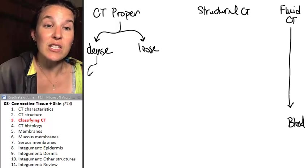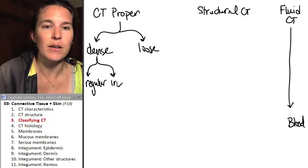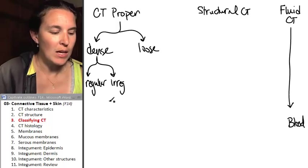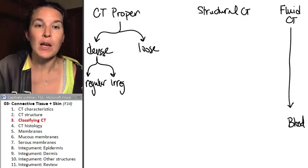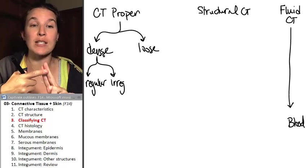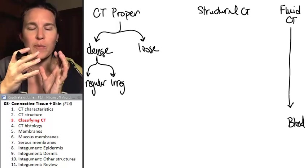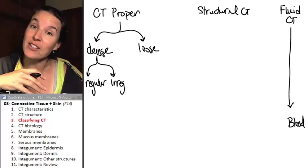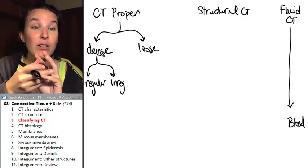Dense connective tissues come in two flavors: regular and irregular. So far so good. So we only have two options for our dense connective tissues. The fibers tend to be really thick and close together, but in a dense regular connective tissue, they're all lined up and going the same way.